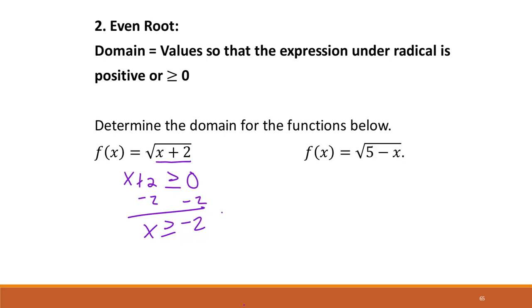We write this in interval notation for values where x is greater than or equal to negative 2. We use a bracket because the equal-to portion means negative 2 is included in the interval. Then since x has to be greater than negative 2, we use positive infinity because that's the only stipulation — it can go on forever.